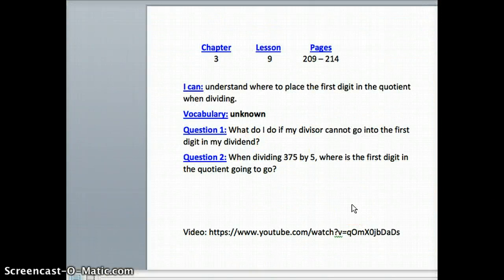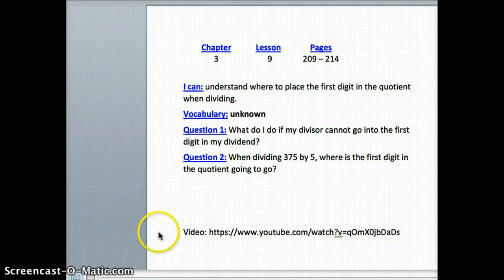Okay, so look back at your questions. Question 1: What do I do if my divisor cannot go in the first digit of my dividend? So that was basically all the problems we talked about. And question 2 gives you an example. So if you're dividing 375 by 5, where is the first digit that your quotient will go into? So check back in the video if you need help with those.